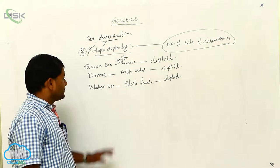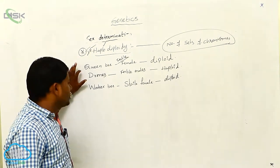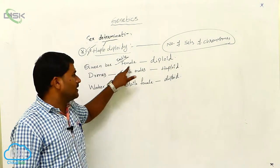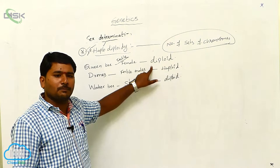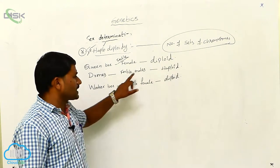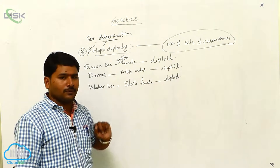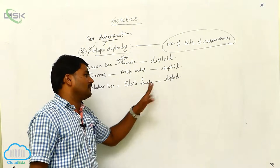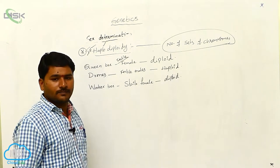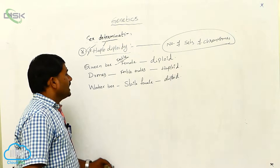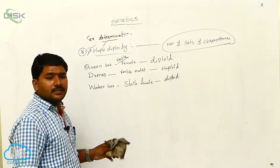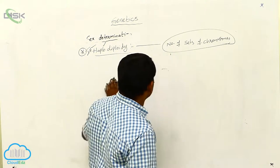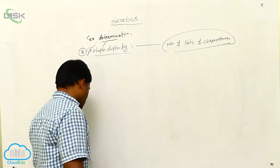In a bee colony, there are three types of honeybees: the queen bee, which is a fertile female with two sets of chromosomes (diploid); the drone, which is a fertile male with one set of chromosomes (haploid); and the worker bee, which is a sterile female with two sets of chromosomes. In honeybees, 16 pairs of chromosomes are present.